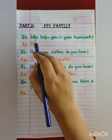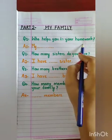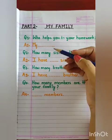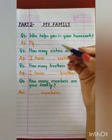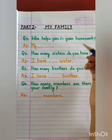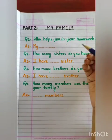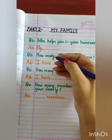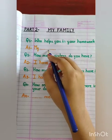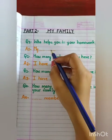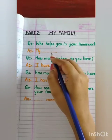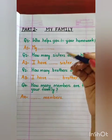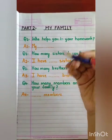Question number one is: Who helps you in your homework? Aap se koi yeh bhi pooch sakta hai ke aap ki homework karane mein aap ka help kaun karta hai? Ghar mein bachche hain, chhote bachche hain — zaahir si baat koi na koi homework mein help karta hoga. Agar aap ki mother help karti hain to aap bolenge 'my mother'. Agar aap ke father help karte hain to 'my father'. Agar bhai help karta hai to 'my brother', sister to 'my sister', aunt to 'my aunt'. Jo bhi aap ki homework mein help karta hai uska naam batayein.